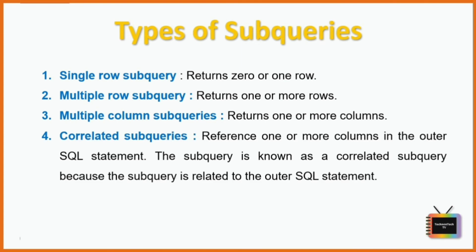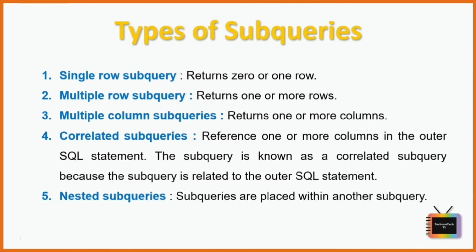Next is a correlated subquery. Correlated subqueries are used for row-by-row processing — each subquery is executed once for every row of the outer query. It is one way of reading every row in a table and comparing values in each row against related data. It is used whenever a subquery must return a different result or set of results for each candidate row considered by the main query. Finally, nested subqueries are subqueries placed within another subquery. You can use any of these depending on the situation and desired result.